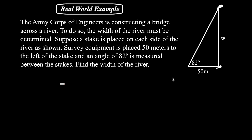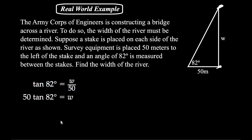Standing at the 82-degree angle as your reference, W is the opposite side and 50 is the adjacent side. Opposite over adjacent means we use the tangent function. The tangent of 82 degrees equals W over 50. Multiplying both sides by 50, W equals 50 times the tangent of 82 degrees. Make sure you're in degree mode, take the tangent of 82 and multiply by 50 — the width of the river to the nearest tenth is about 355.8 meters.